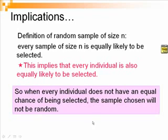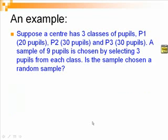Let us see how we can use this result to solve a problem. Suppose the centre has three classes of pupils, P1, P2 and P3, with 20, 30 and 30 students respectively. A sample of nine students is to be chosen, and that is by selecting three from each class. Is the sample chosen a random sample?